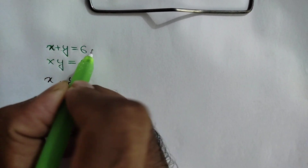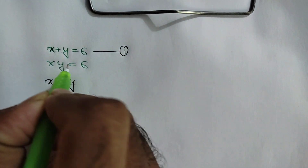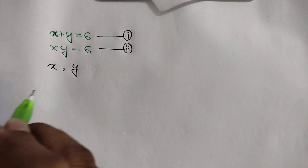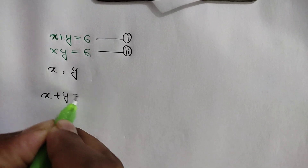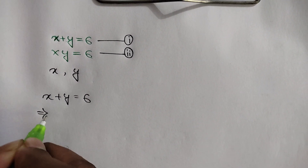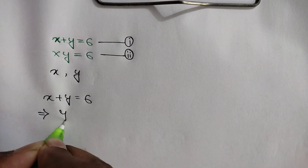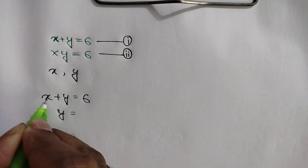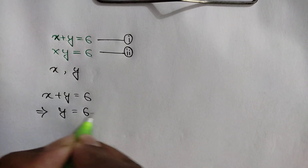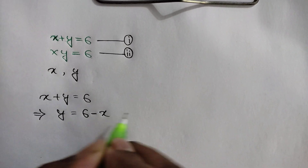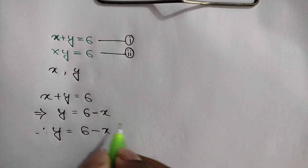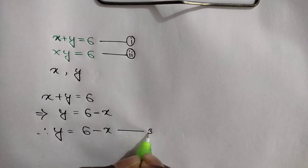This is equation number 1 and this is equation number 2. We will get x plus y is equal to 6 from equation number 1, or y is equal to 6 minus x, getting x to the right side. So y is equal to 6 minus x — this is equation number 3.